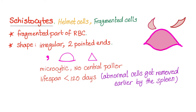Schistocytes, or helmet cells, or fragmented cells, are fragmented parts of red blood cells — tiny pieces of RBCs. Their shape is irregular; they usually have two pointed ends and can take various shapes such as a comma, a helmet, or a triangle. They are microcytic, meaning smaller than normal red blood cells, and have no central pallor, unlike normal RBCs. Their lifespan is less than 120 days because abnormal cells get removed earlier — it's called natural selection.